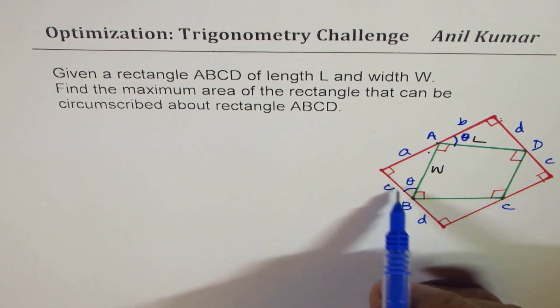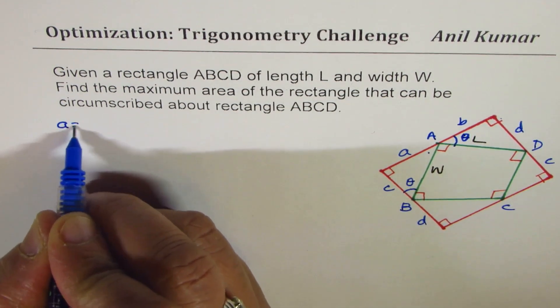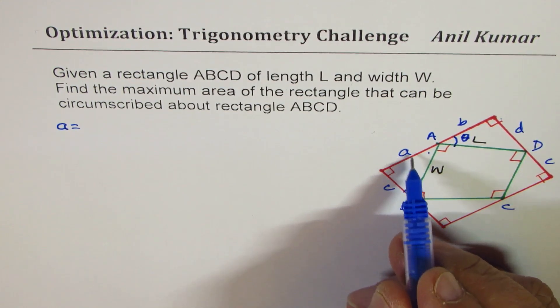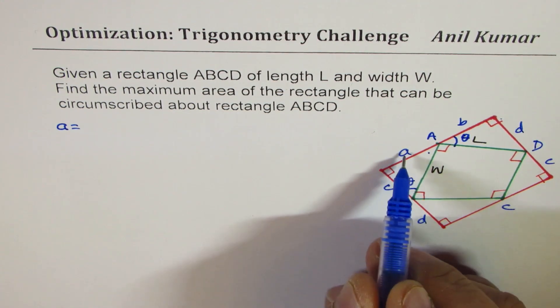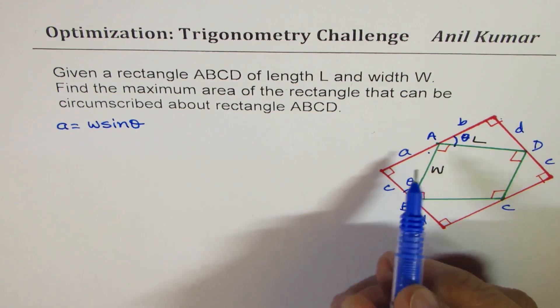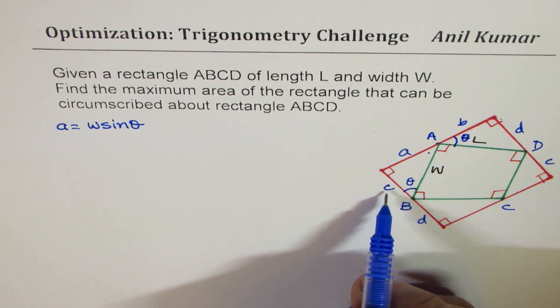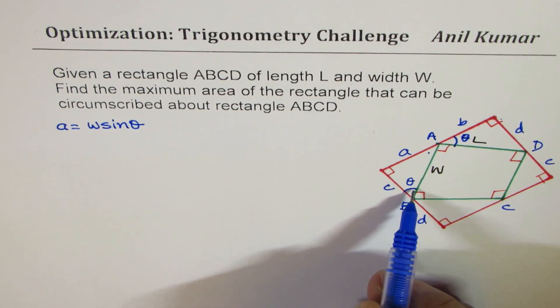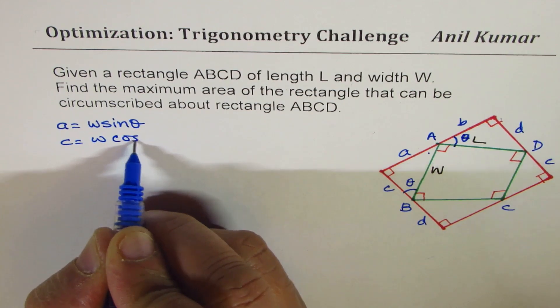This one is the right triangle, the smaller one here. Here, A can be written as what? A is side opposite to theta, and therefore, it could be written as W sine theta, correct? So A is W sine theta. C in this particular triangle will be W cosine theta, since C is the side adjacent to theta, right? So C will be W cosine theta.